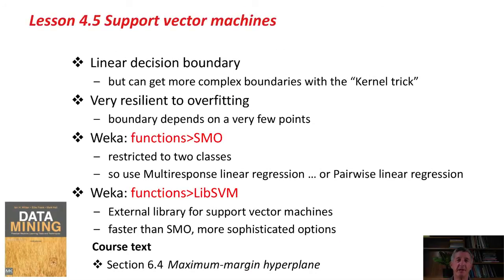That's it. Support vector machines. It's a linear decision boundary. Actually, there's a really clever technique which allows you to get more complex boundaries. It's called the kernel trick. By using different formulas for the kernel in Weka, you can select different possible kernels. You can get different shapes of boundaries, not just straight lines. Support vector machines are fantastic because they're very resilient to overfitting. The boundary just depends on a very small number of points in the dataset. It's not going to overfit the dataset because it doesn't depend on almost all of the points. It's just a few critical points, the support vectors. It's very resilient to overfitting, even with large numbers of attributes.